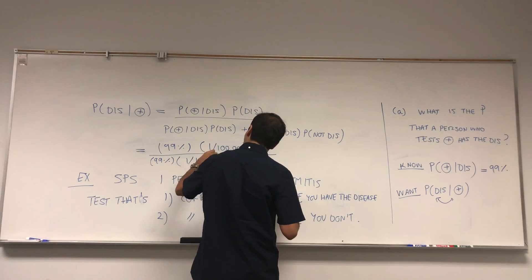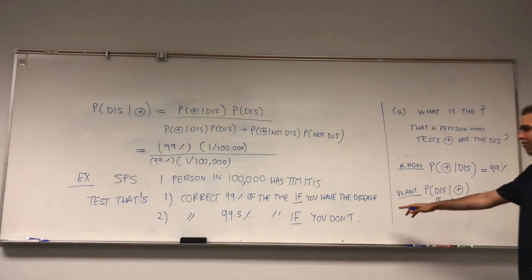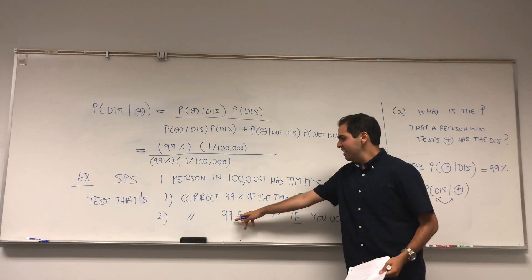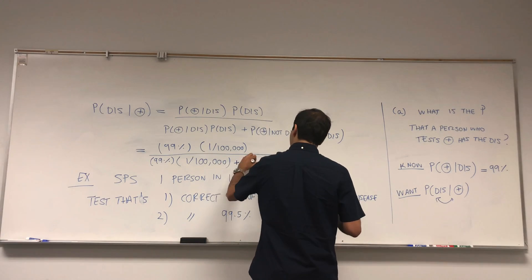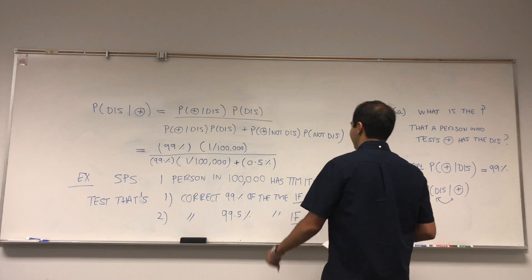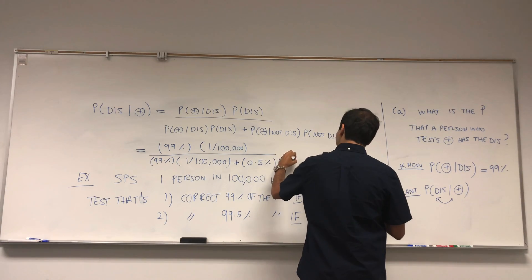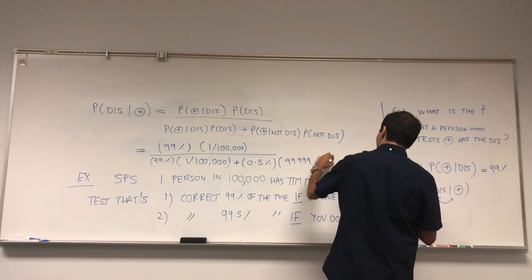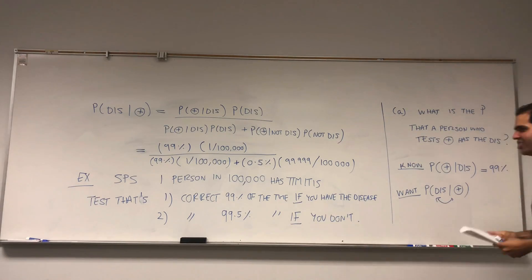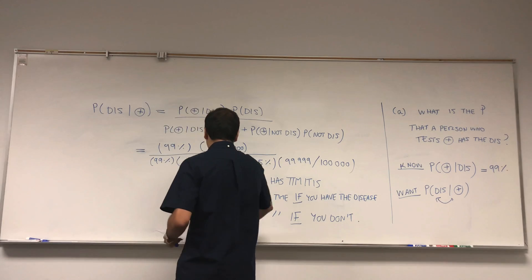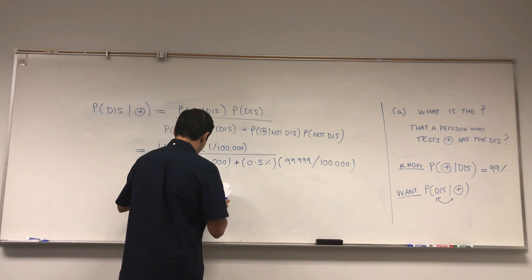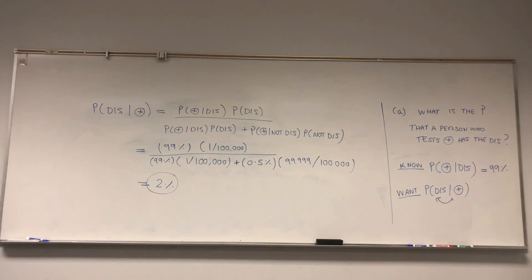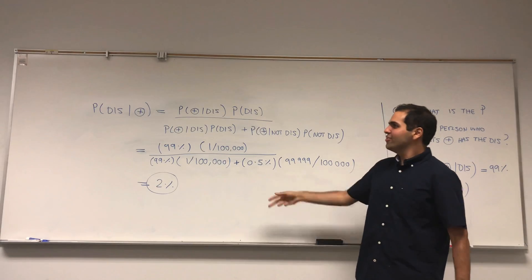The probability of having the disease is 1 in 100,000. So the numerator is 99% times 1 over 100,000. If you don't have the disease, the test is correct 99.5% of the time, meaning 0.5% of the time it tests positive while not having the disease, and the probability of not having the disease is 99,999 over 100,000. If you plug this in, you get about 2%.